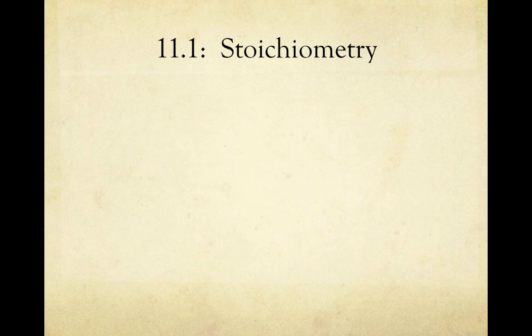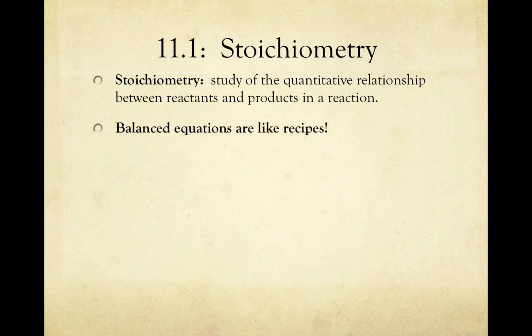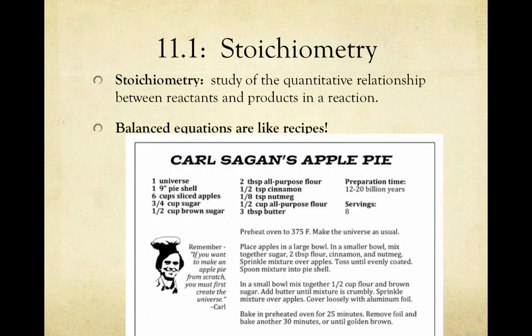In this unit, we're going to start talking about stoichiometry. Stoichiometry is the study of the quantitative relationship between reactants and products in a reaction. Therefore, in this unit, we'll be thinking about balanced equations like recipes. Take this recipe here for Carl Sagan's apple pie. This recipe tells us lots of important things.